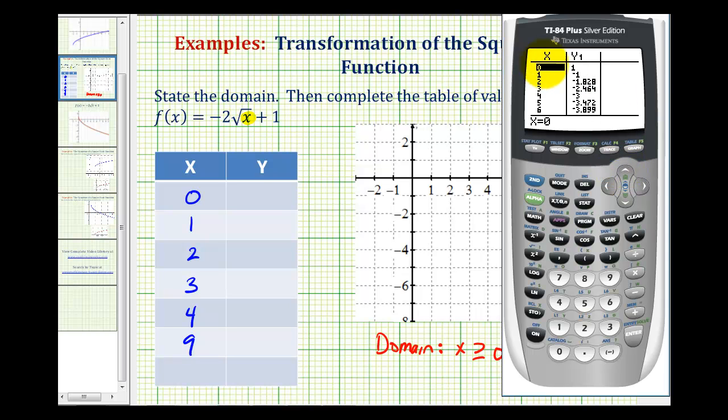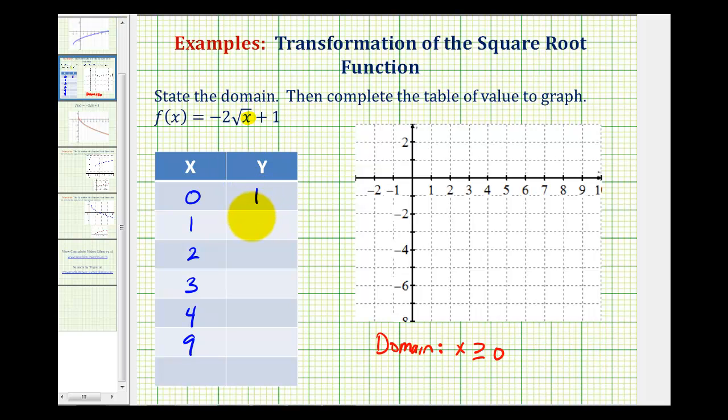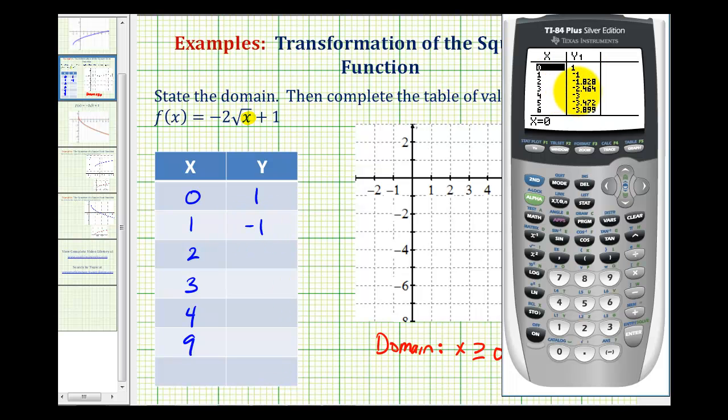Here we have zero and one. Let's go ahead and record that: zero, one and one, negative one. When x equals two, y is approximately negative 1.8. And when x is three, y is approximately negative 2.5.